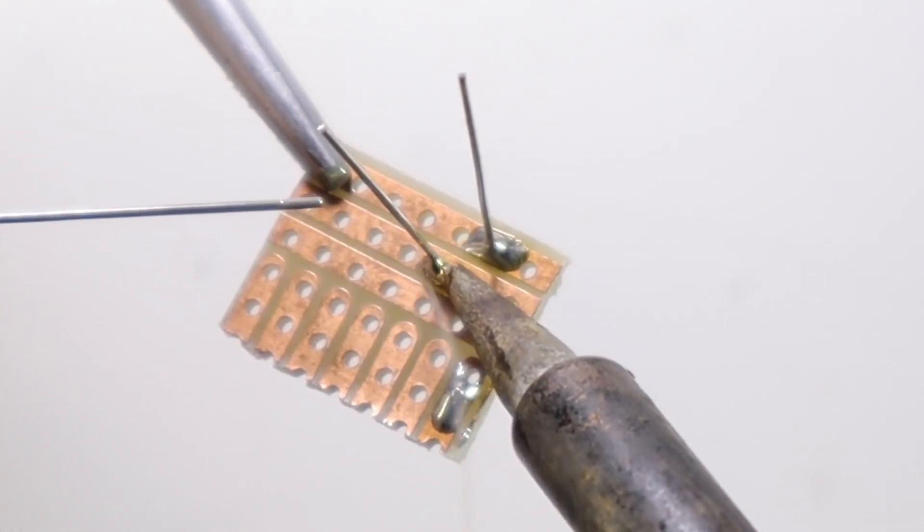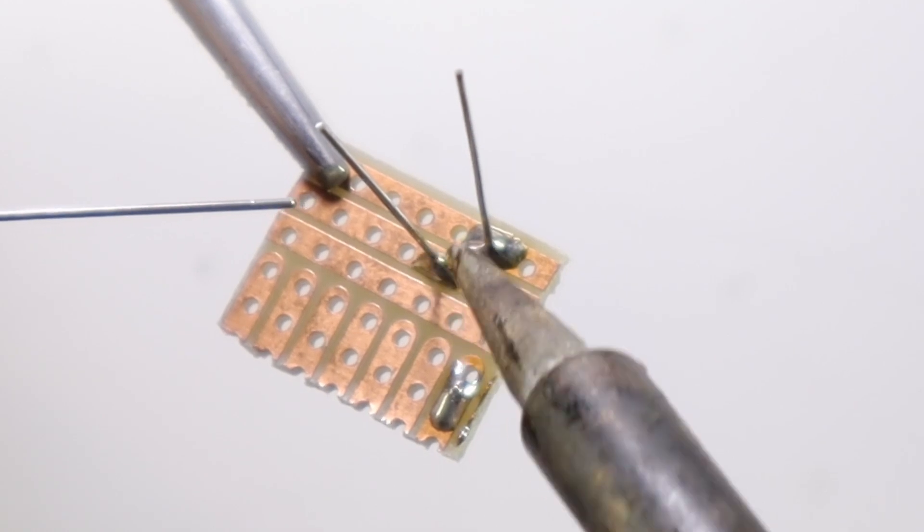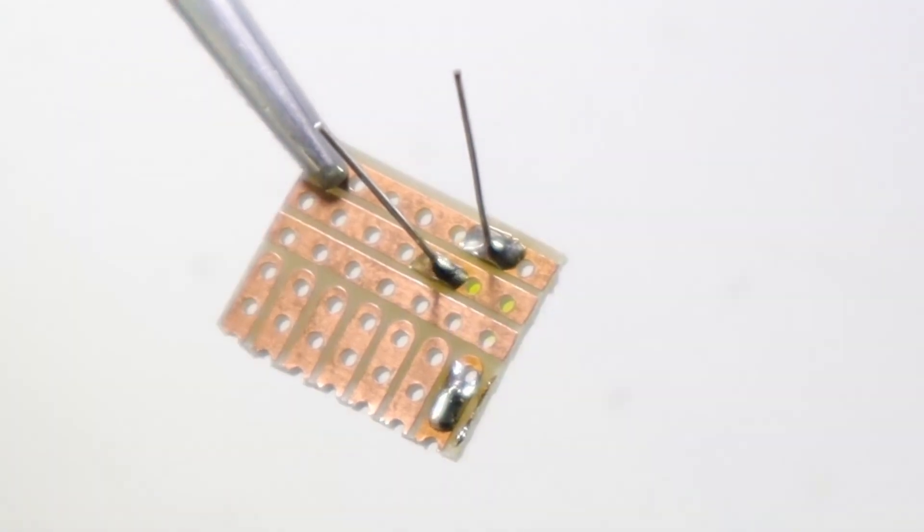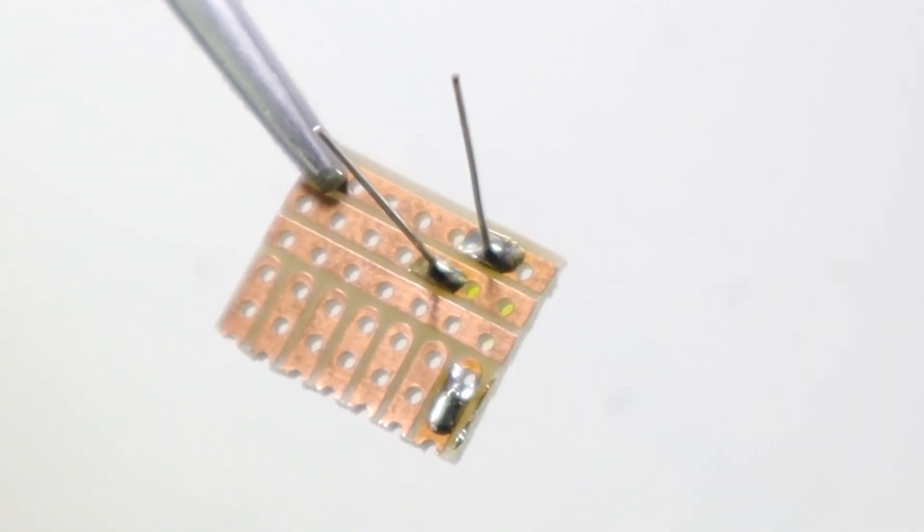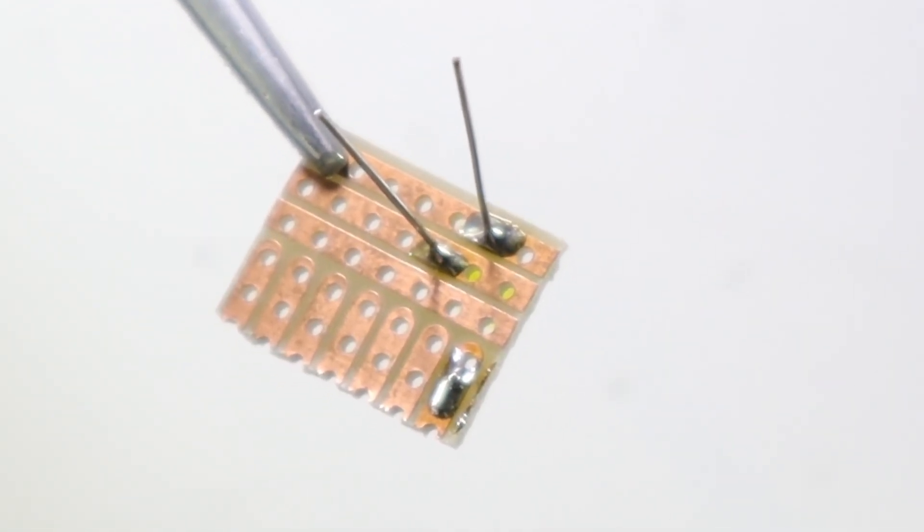If that doesn't happen, then either your component leg or your track is not clean, you may not use the correct solder, or the temperature of your iron is too cold or in some cases too hot.